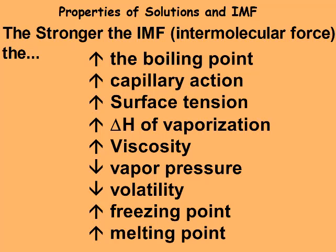The stronger the intermolecular force, the higher the boiling point, capillary action, surface tension, heat of vaporization, and generally viscosity. The lower the vapor pressure and the lower the volatility—volatility is how easily it turns into a gas. If it turns into a gas easily, it has a high vapor pressure. The higher the IMF, the higher the freezing and melting point—higher pretty much all properties except vapor pressure and volatility.